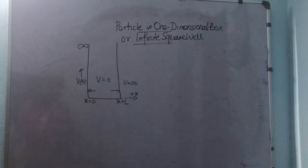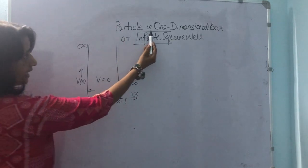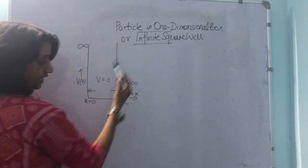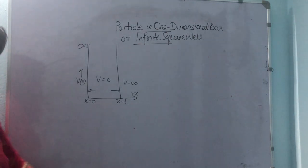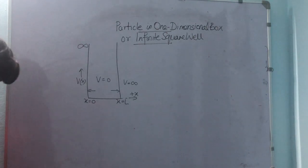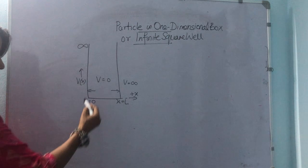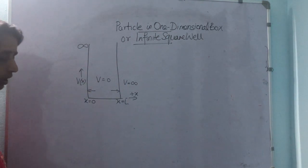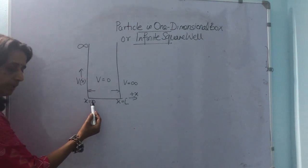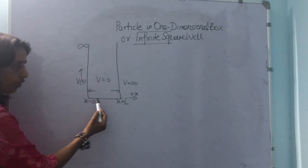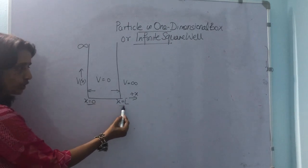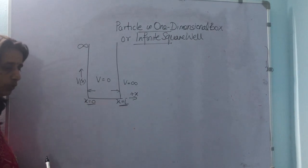Hello students. Today's lecture we will discuss particle in one dimensional box or infinite square well. A particle is trapped in a rectangular one dimensional potential box. The box restricts the particle to move along the x-axis between x equal to 0 and x equal to L.